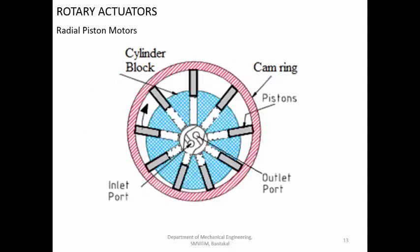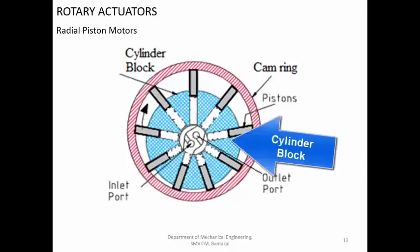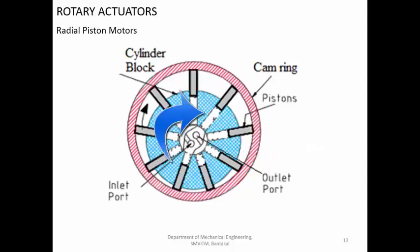Next one is the radial piston motor. In the radial piston motor, you are having the piston which is reciprocating inside. You are having the inlet port and the outlet port. Whenever high pressure fluid or compressed air enters, the pistons are pushed outward. The forces will be tangential and perpendicular to the inner surface. Because of the tangential component of the force, this cylinder block will try to rotate. When the cylinder block rotates, the drive shaft connected to it also rotates and a rotary motion is generated.